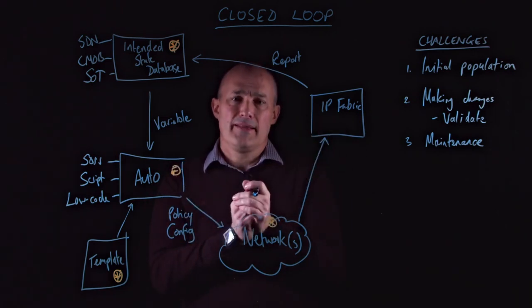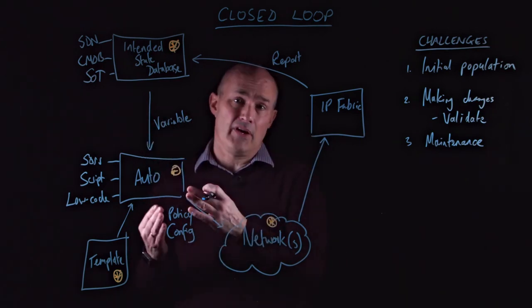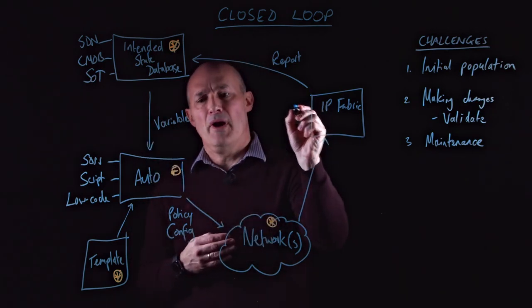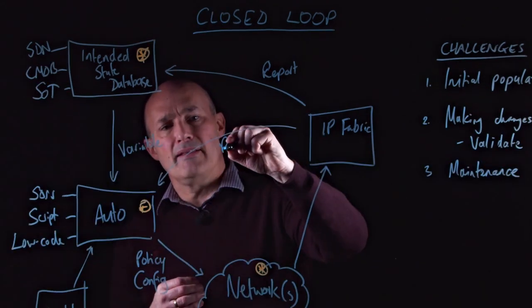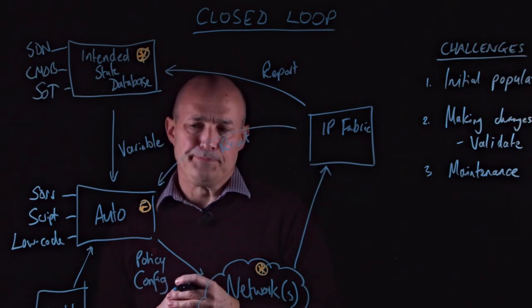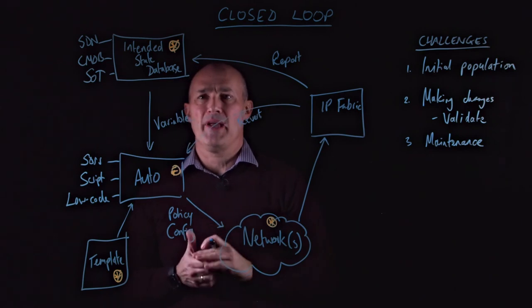Or I may not. I may decide that, actually, that change should never have happened and I need to revert it. In which case, you might then close the loop directly into the automation and revert that change and close the loop that way. So there are two aspects to that.